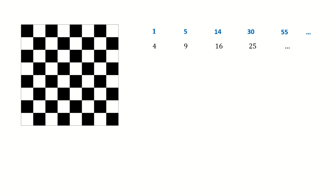The first thing to do is to calculate the differences. As you can see, the differences are not constant. Let's do it again — again, they are not constant. Let's do it for the third time. Now you see that the differences are constant. That means you get the constant difference after three levels, so the original formula should be a third-degree formula.